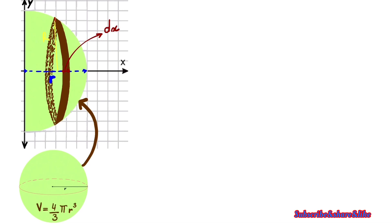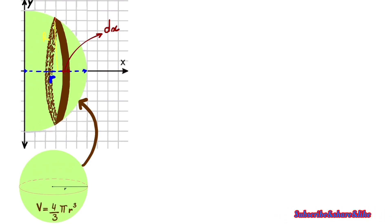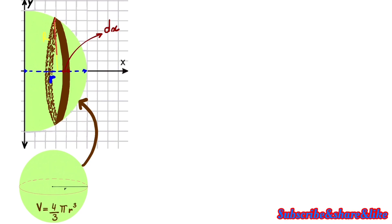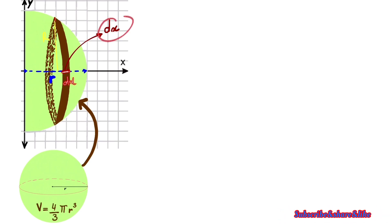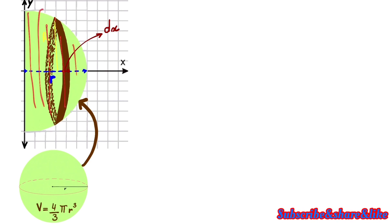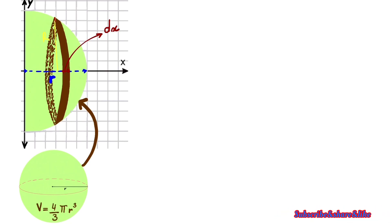Hello everyone, I'm Stefan. In this tutorial we're going to derive the formula of a sphere from scratch. If you didn't check my previous video, we derived the formula of the volume of a cone. This time we're doing the formula of a sphere. The idea is we're going to select a small cylinder with radius r and thickness dx, find its volume, and then sum them all by integrating from zero to R.